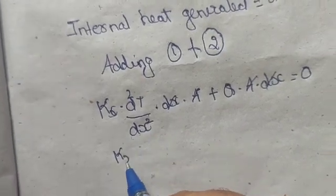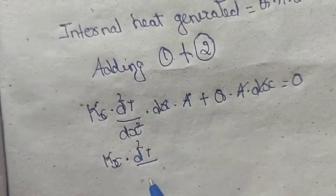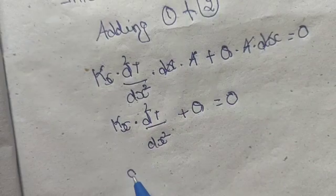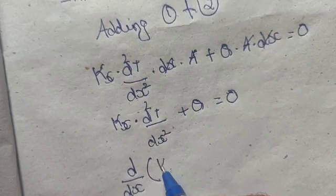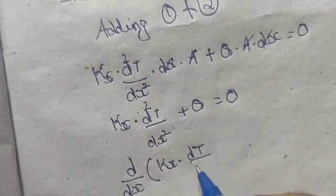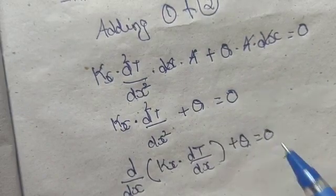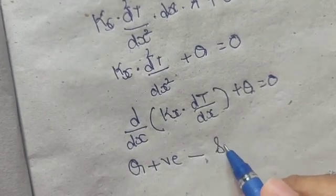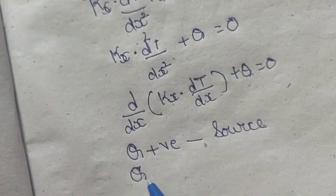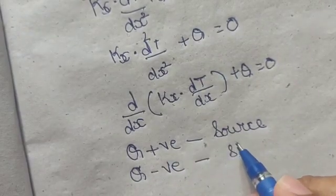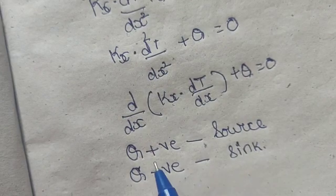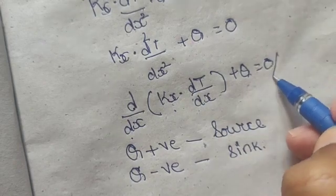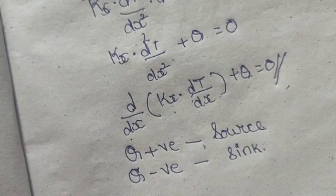Therefore, the remaining expression is: kx · d²T/dx² plus Q equals zero. Or equivalently: d/dx(kx · dT/dx) plus Q equals zero. If Q is positive, it is called a source; if Q is negative, it is called a sink. This is the governing equation for one-dimensional heat conduction. Thank you.